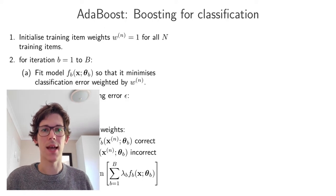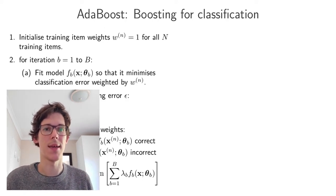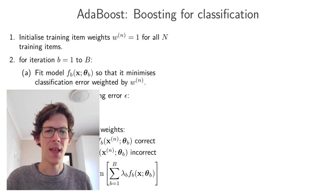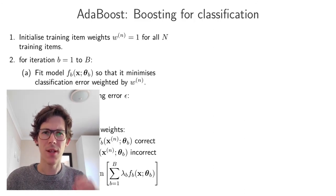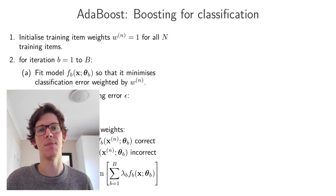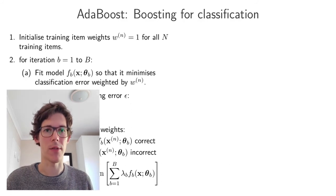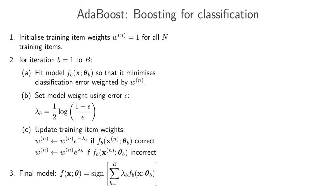In the last video we looked at a step-by-step example of applying AdaBoost to a particular dataset. There were still a few of the core details missing in the algorithm and that's what we'll look at in this video. Within the training iterations, I'll just step through steps A, B, and C in a little bit more detail.